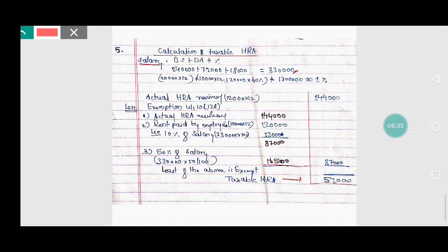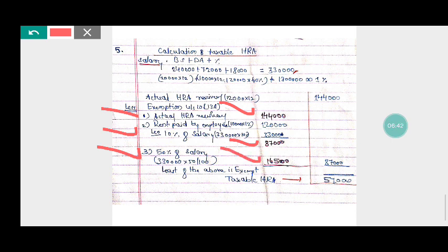Salary is Rs. 3,30,000, out of that 50% means Rs. 1,65,000. Out of these three values—actual HRA received by Mr. Rahul is Rs. 1,44,000, second point is Rs. 87,000, third point is Rs. 1,65,000—the least of the value is Rs. 87,000, so he will get this as exemption.